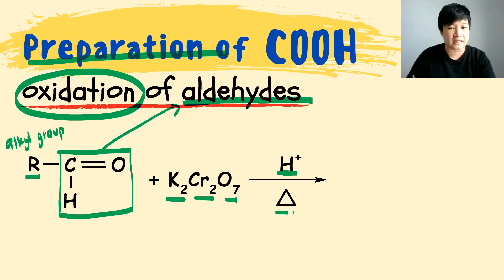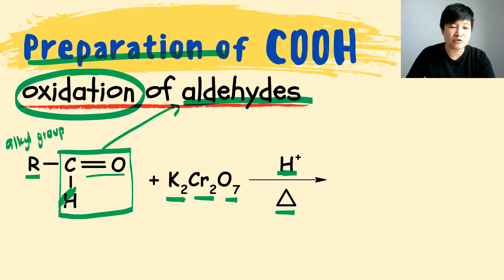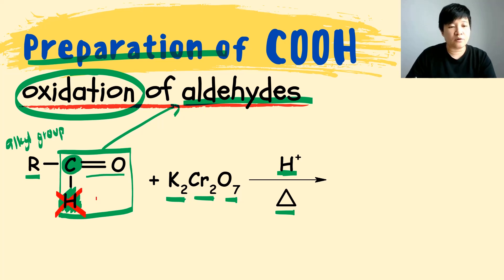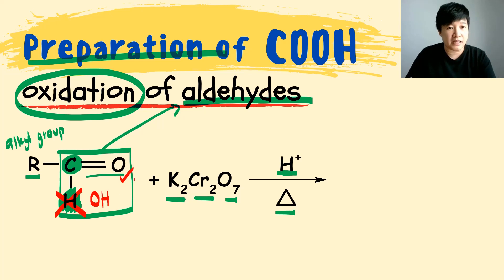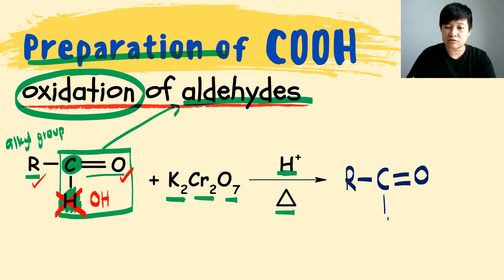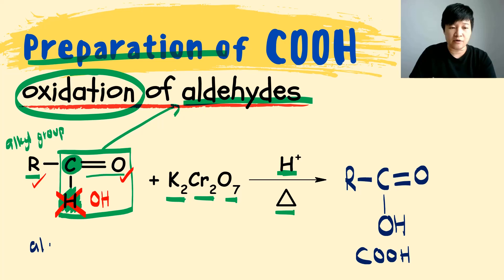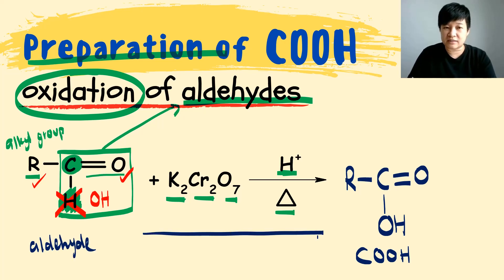Right now we are using a strong oxidizing agent: K2Cr2O7 with the presence of H+ and heat. We will try to oxidize the aldehyde to the maximum. The double bond O is already at maximum, so we only focus on the hydrogen attached to the carbon holding the double bond O. This hydrogen will be removed and replaced by OH — that is the oxidation of aldehyde. The double bond O remains unchanged, the R group remains unchanged, and the product has the double bond O remaining while the hydrogen is oxidized to become OH. That is your carboxylic acid formed from aldehyde undergoing strong oxidation.